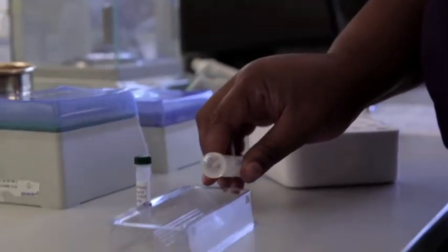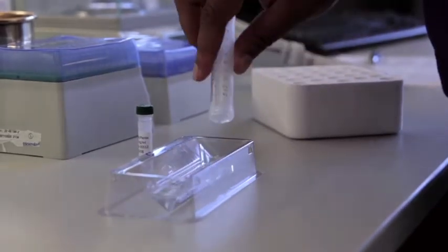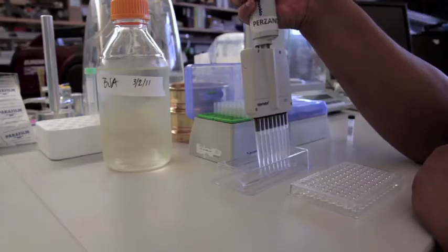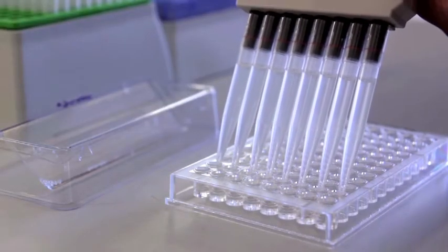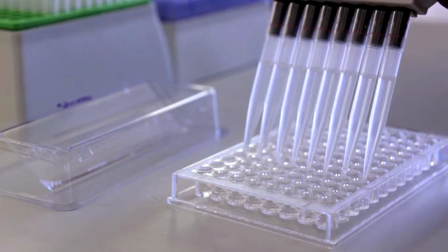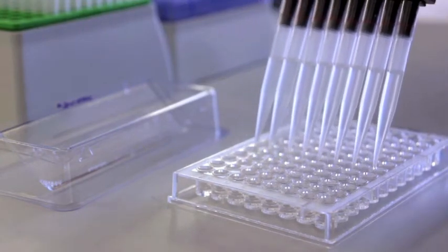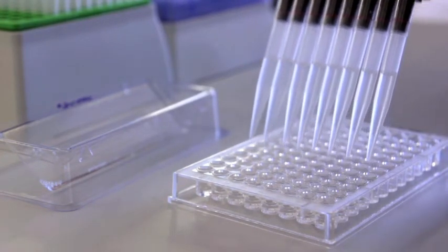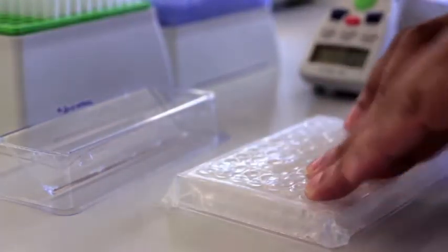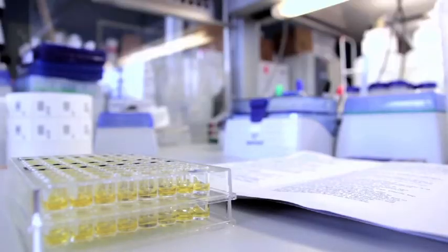So cockroach, dust mite, mouse proteins. Those are put into ELISA plates, microtiter plates. And through a series of steps of adding different reagents, we're able to then detect how much of these proteins are in each sample, so we know how much mouse allergen, how much cockroach allergen is in those samples. And that's determined at the end of the day by a change in color for each one of those samples.